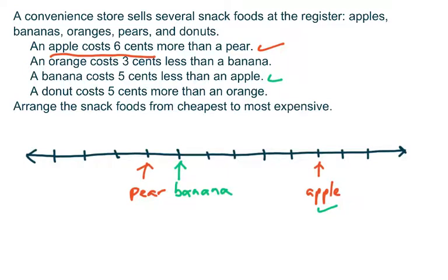Then I can go back to the previous line because that referenced a banana, and the fact that an orange costs three cents less than a banana means I can start at the banana position and count three places to the left, one, two, three, and that tells me that the orange would be right here.